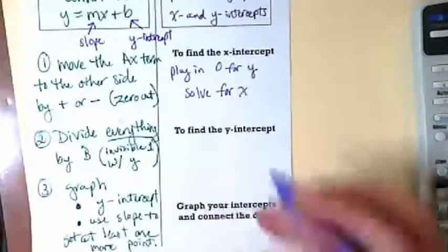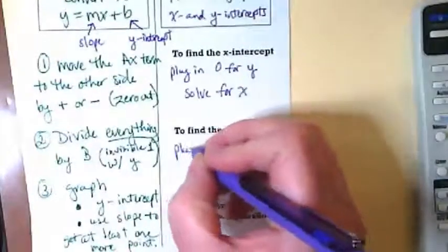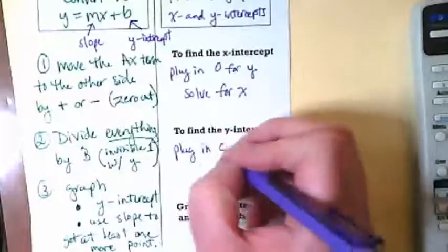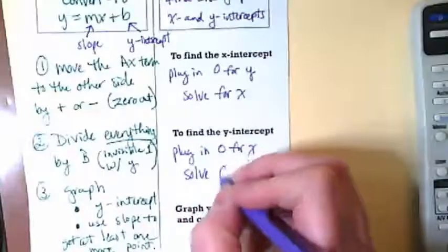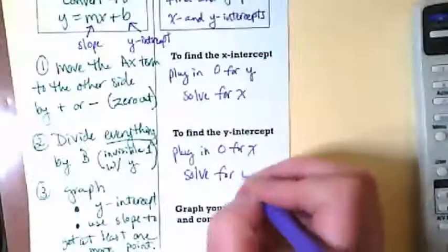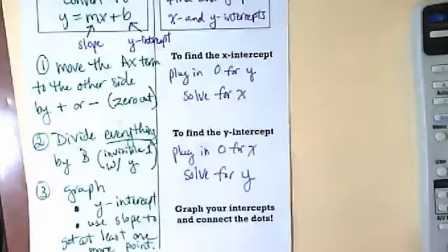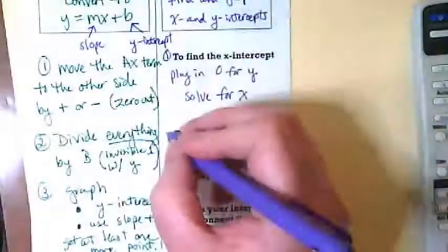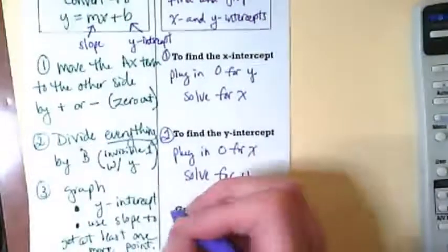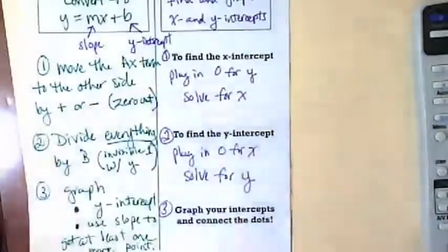To find the y-intercept, we do the opposite. We plug in 0 for x and solve for y. And then the final step is we graph our intercepts and connect the dots. So let's label these. This is step 1, this is step 2, and this is step 3.